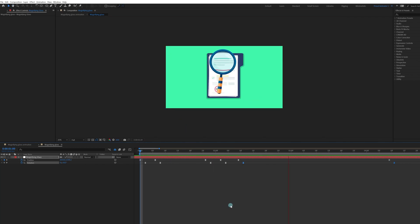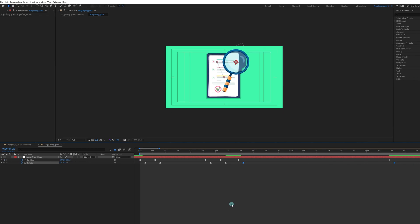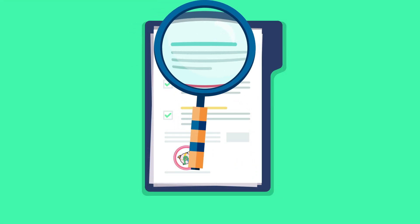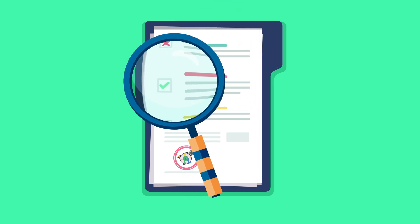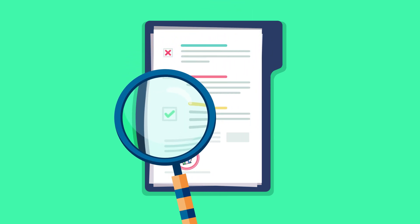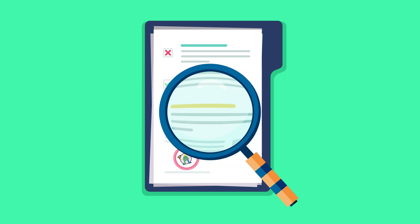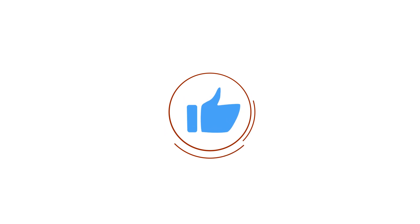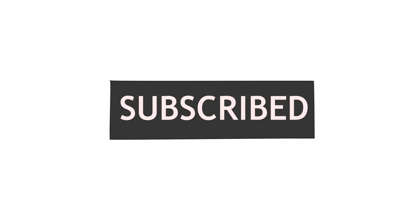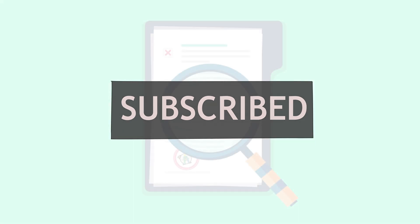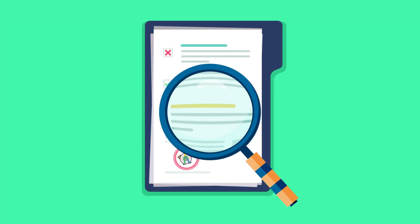Like this you can animate a magnifying glass in After Effects. Do try it on your own — I have provided the illustration file. Let me know in the comments below if you have any doubts. If you like it, hit the Like button. If you have any questions, comment down and I'll be happy to help. If you are here for the first time, subscribe to the channel and hit the bell notification button to stay notified for future updates. Until then, goodbye.